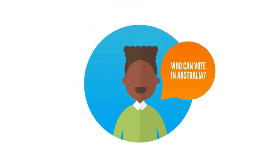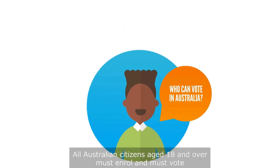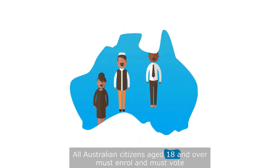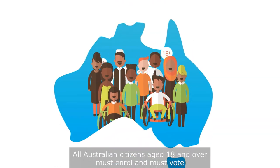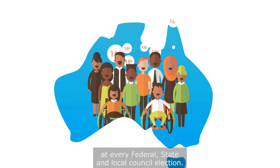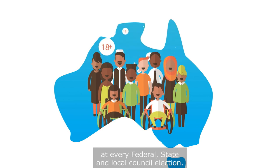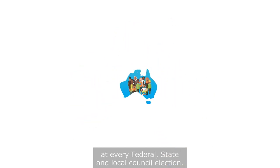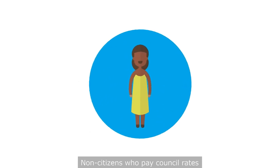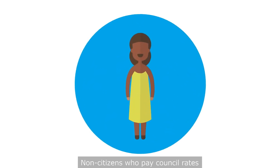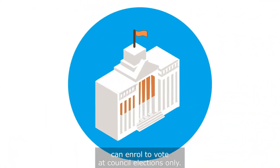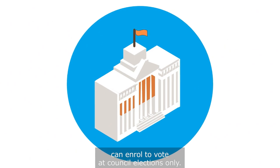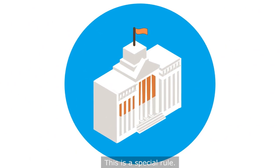Who can vote in Australia? All Australian citizens aged 18 and over must enrol and must vote at every federal, state and local council election. Non-citizens who pay council rates can enrol to vote at council elections only. This is a special rule.